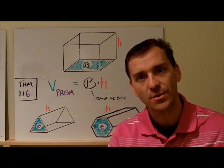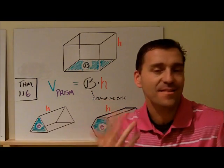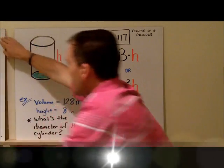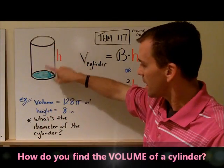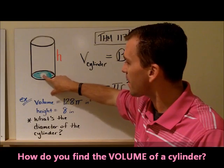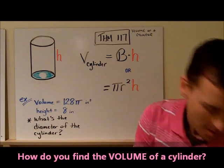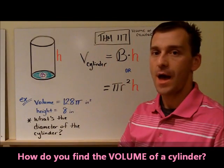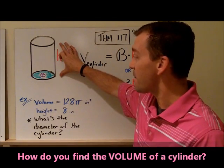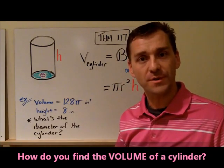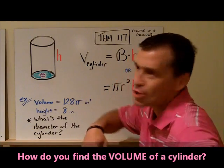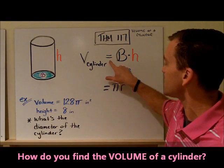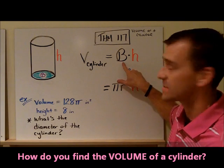It's exactly the same concept. Here's my cylinder, here's the base. If I can find the area of this particular base, the area of the base - good old script B - and I take that times the height, that will give me the number of cubic units. This is theorem 117, volume of a cylinder.